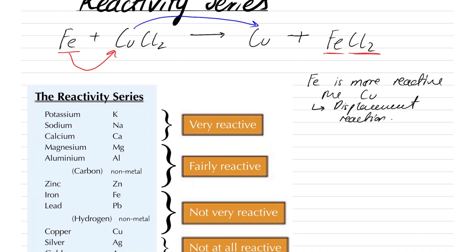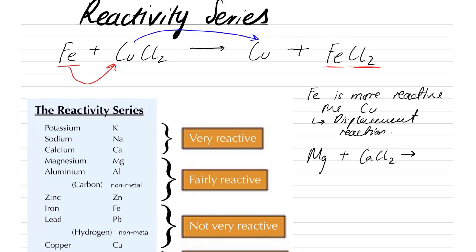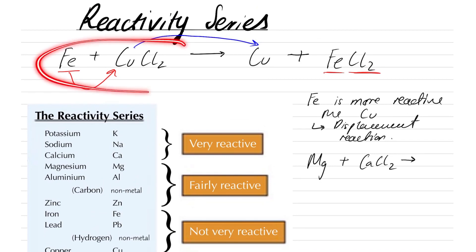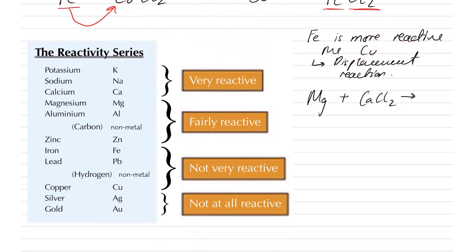Now, if I wanted to see if this reaction would happen — Mg plus calcium chloride — would this reaction happen? Well, how can we check? We know that for this reaction to happen, the iron has to be more reactive than the copper. In this reaction, we have to check if magnesium is more reactive than calcium. How do we check this? We have to refer to something called the reactivity series.